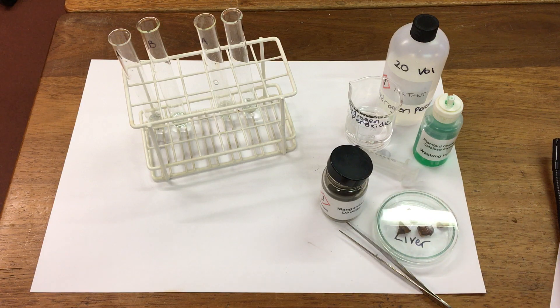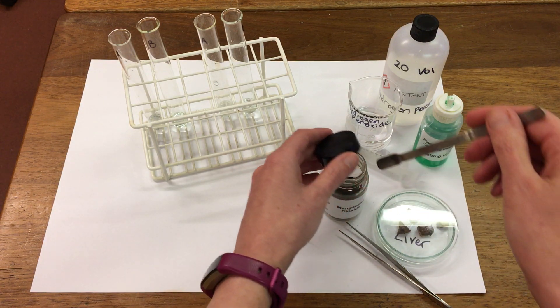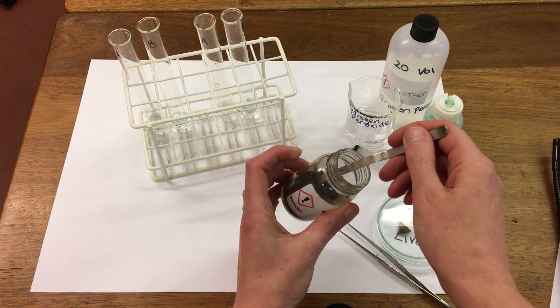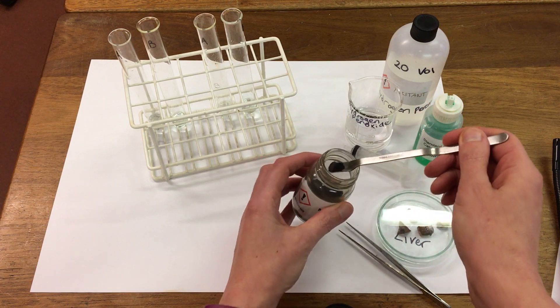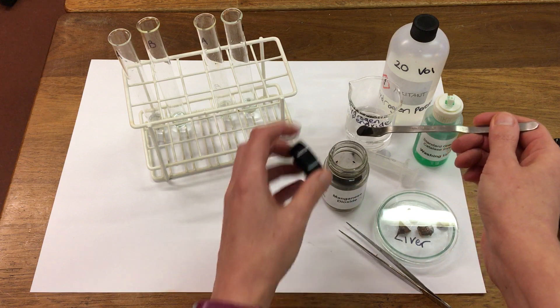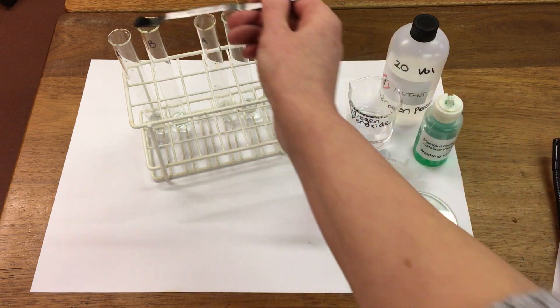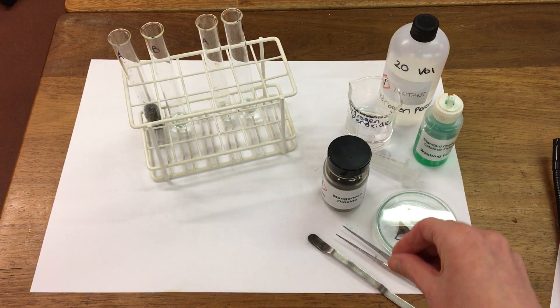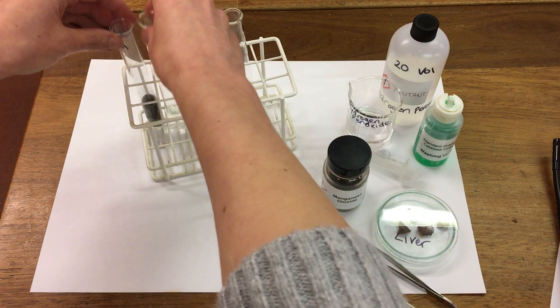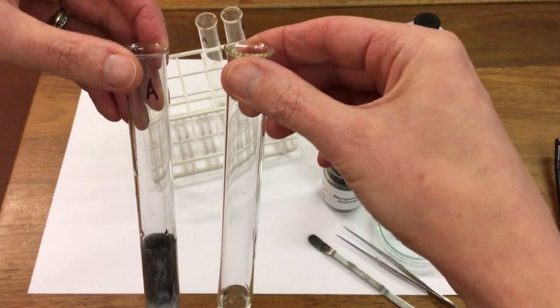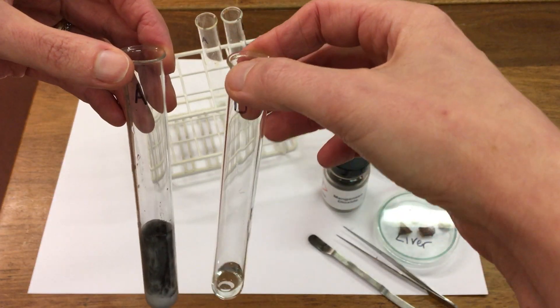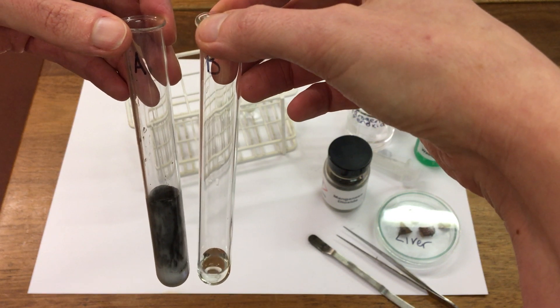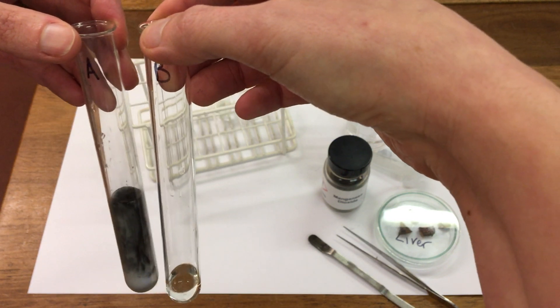So in our first set we're going to add the catalyst manganese dioxide and compare it to a blank with no catalyst. So this one has our catalyst and we can see the foam being produced and this one with no catalyst.